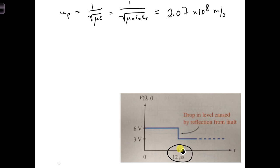This is the time it takes the V1 plus wave to propagate down to the fault and then back again to the generator. If we say the location of the fault is at Z equal D,